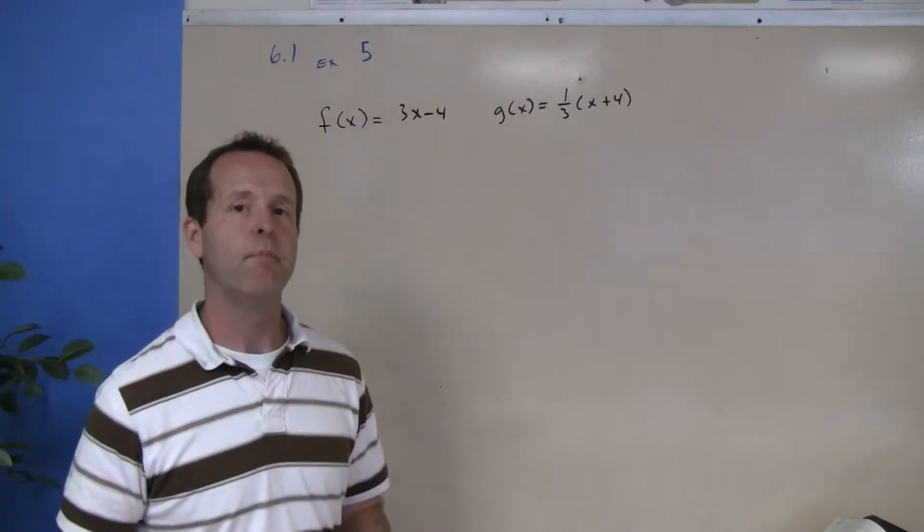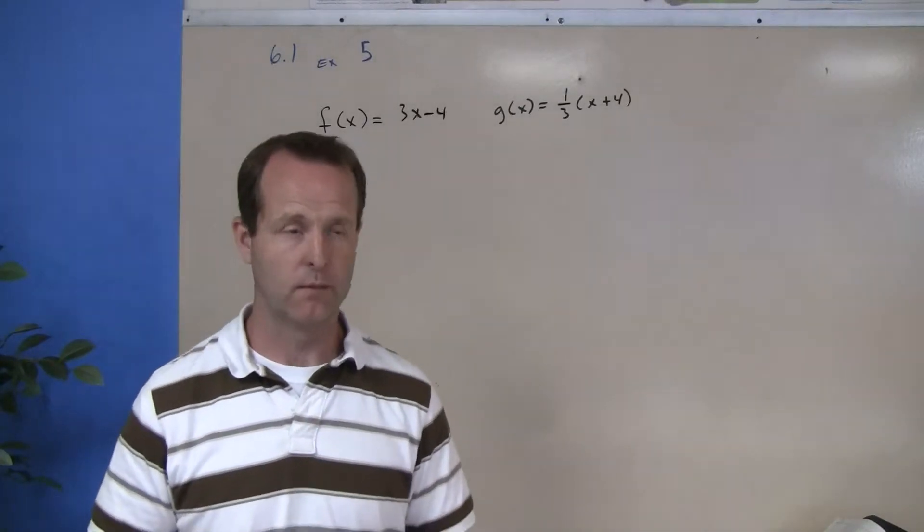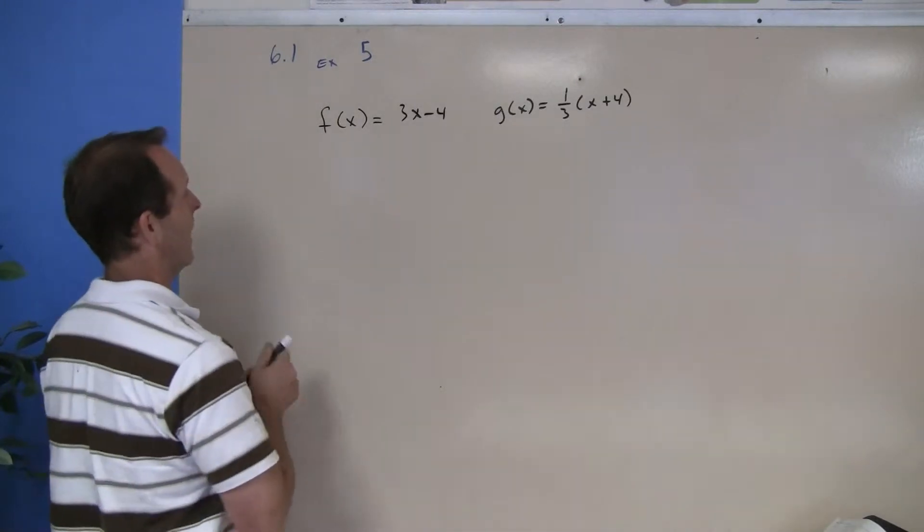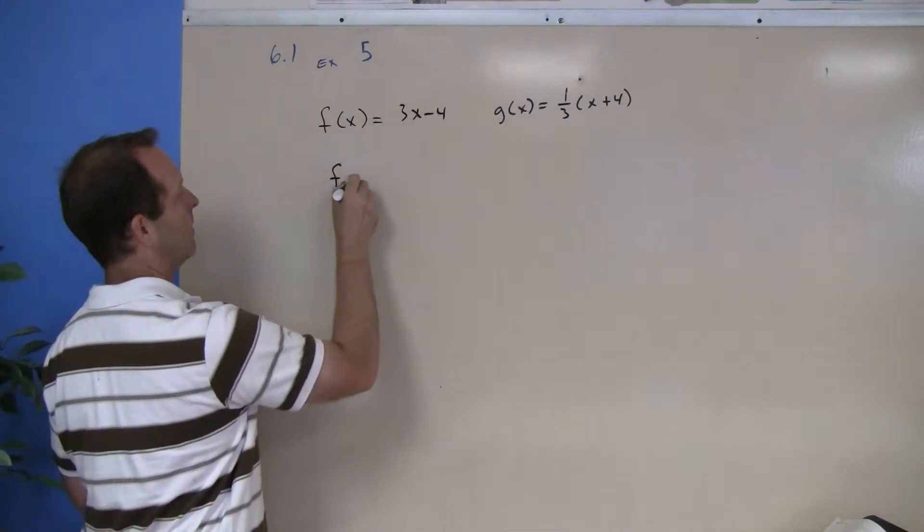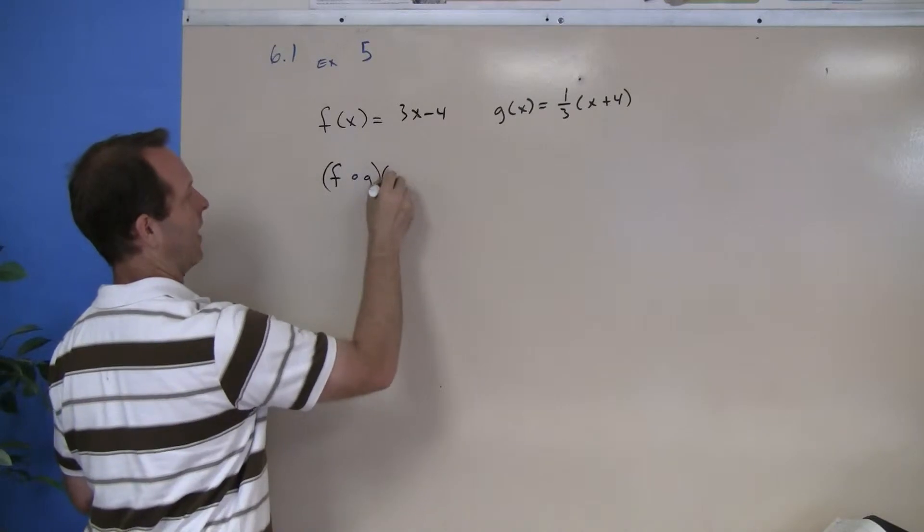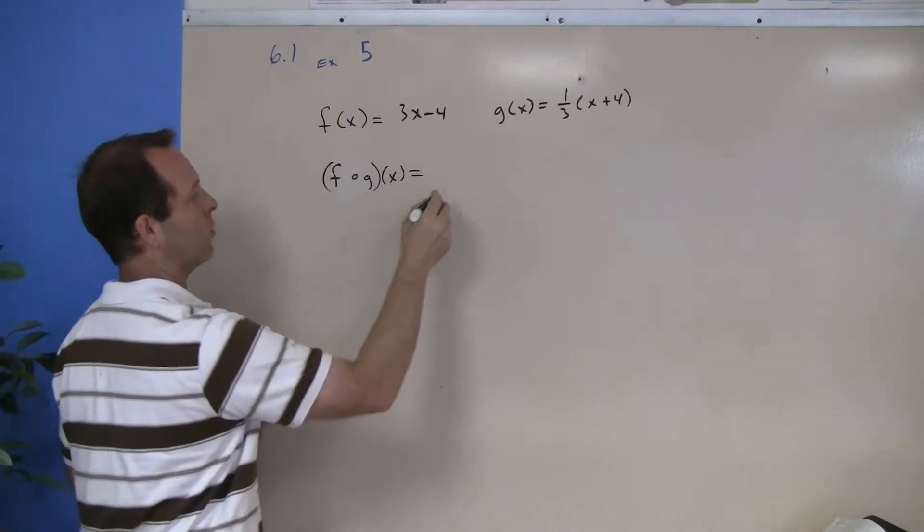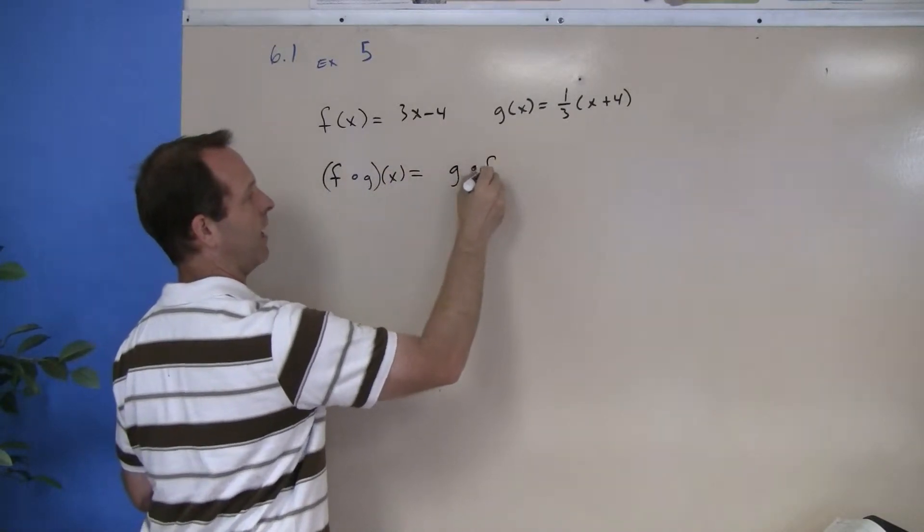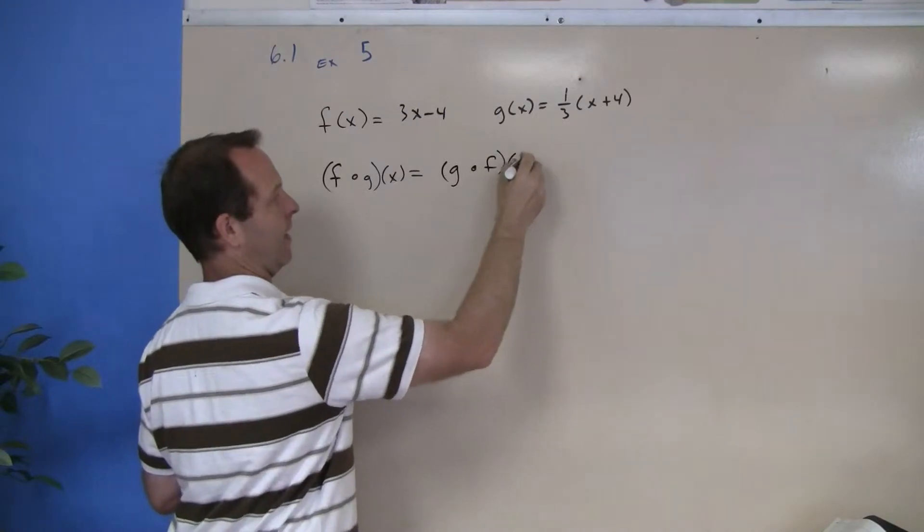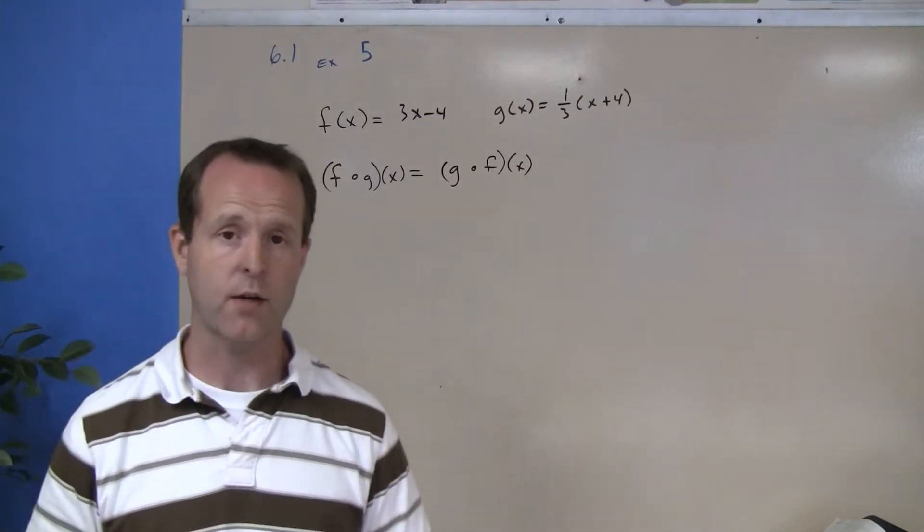Sometimes we want to show that two composite functions are equal. So for example, f composed of g of x equals g composed of f at x. So how do we show that two composite functions are equal?